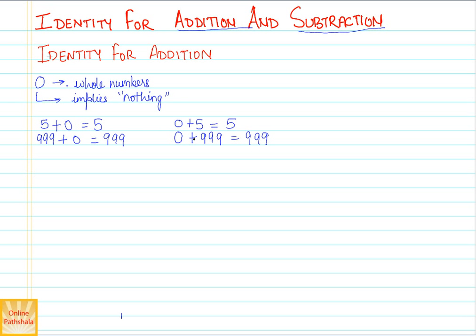This will be applicable for all the whole numbers, no matter in whichever way you add 0. Whether you add 0 earlier or you add a number to 0, we always get the same number.